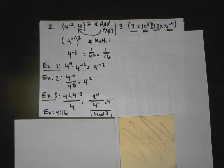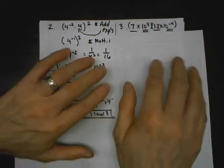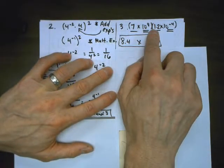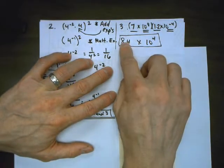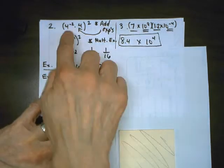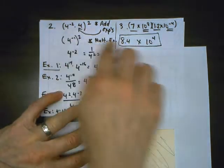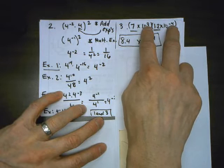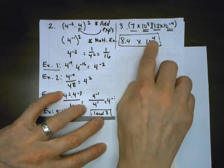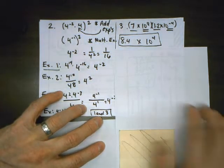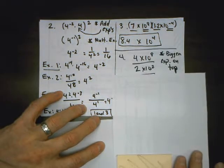Problem number 3: we have to multiply these two numbers. I multiply the coefficients: 7 times 1.2 is 8.4. Then 10 to the 8th times 10 to the 4th — I copy the base and add the exponents: 8 plus negative 4 is positive 4. And that's already in scientific notation.